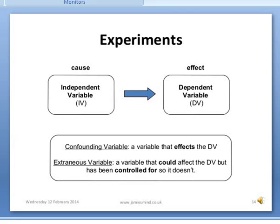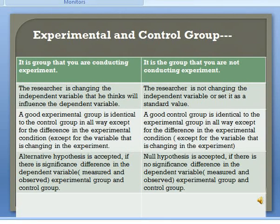Here you can see experimental and control group. Experiments generally involve one or more experimental groups and one or more control groups. An experimental group is a group in which members are exposed to independent variable manipulations. The control group is a comparison group that is treated in every way like the experimental group except that the manipulated variable is absent in it — we do not manipulate the control group.